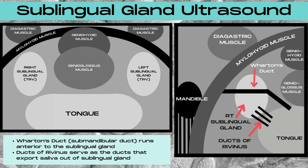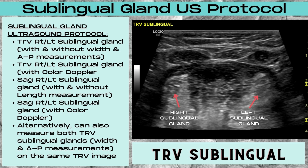Anterior to the mylohyoid muscles are going to be the anterior body of the digastric muscles. On the image to the right, you'll note that Wharton's duct travels anteriorly over the top of the right sublingual gland in the transverse plane. This is why stones within Wharton's duct — which is actually the submandibular duct — can commonly be mistaken for stones within the right sublingual gland. Note the placement of the ducts of Rivinus, which connect the right sublingual gland to the tongue to export saliva. A true sublingual stone at this location would be rare; more commonly you'll see a submandibular stone within Wharton's duct mimicking the appearance of a sublingual stone.